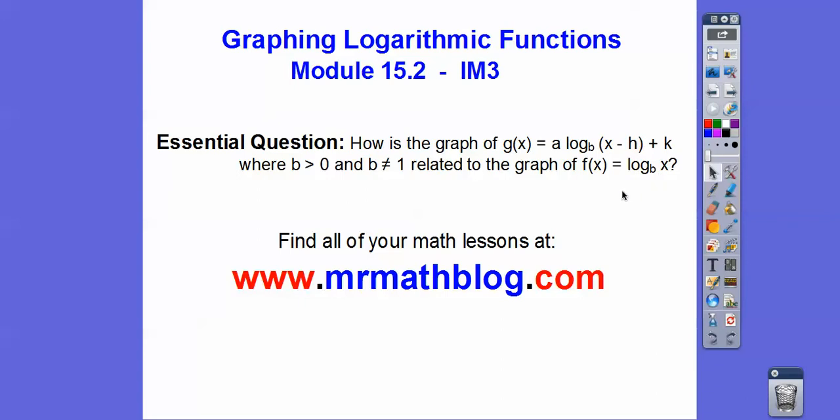So how is the graph of g(x) = a log_b(x - h) + k, where b > 0 and b ≠ 1, related to the regular f(x) graph equals log_b(x)? This is going to be a vertical stretch or compression. If the absolute value of this is greater than 1, it's a stretch. If the absolute value is less than 1, it's a compression. If it's positive, it continues in the same direction. If it's negative, it gets reflected over the x-axis. And do you remember horizontal shift h, k, and we do opposite same.